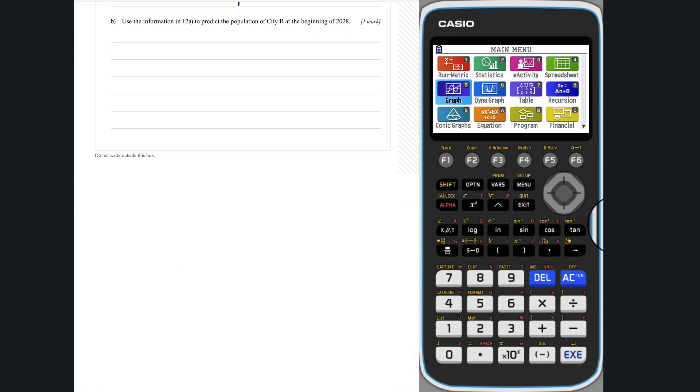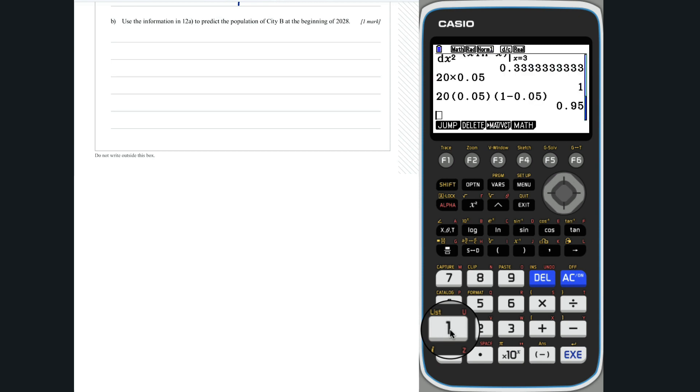Question 12b. We want to predict the population of city b at the beginning of 2028. Given the measurements of the populations began in 2018, t equals 10 represents 2028.